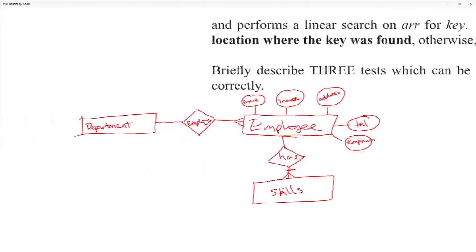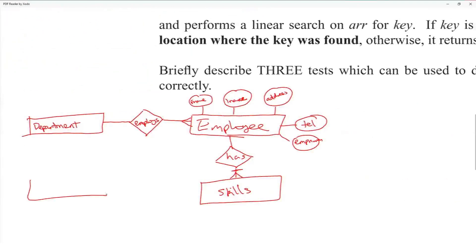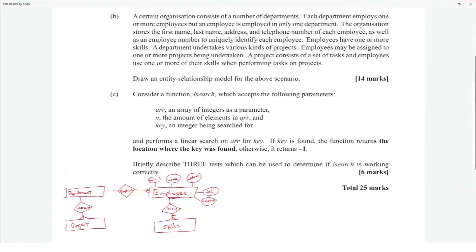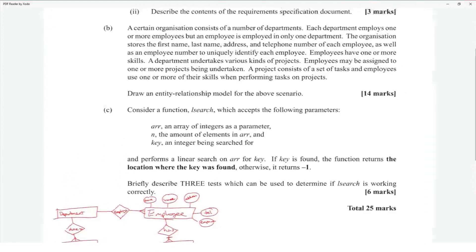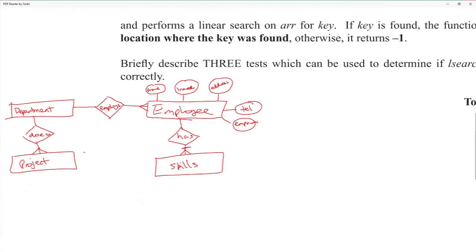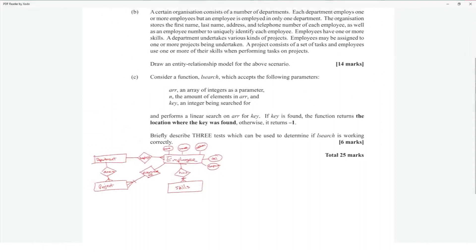A department undertakes various kinds of projects, so we add a 'project' entity. The department employs many projects. Employees may be assigned to one or more projects — so we add an 'is assigned' relationship between employee and project with a one-or-more cardinality.